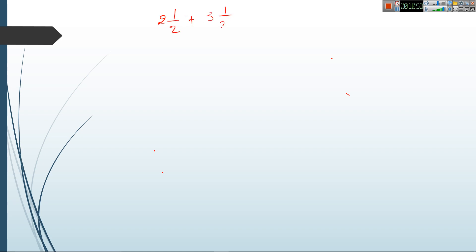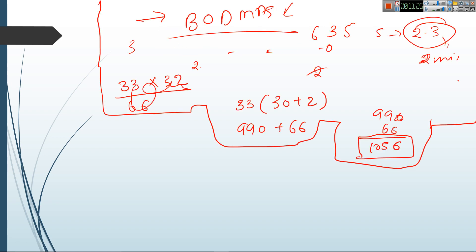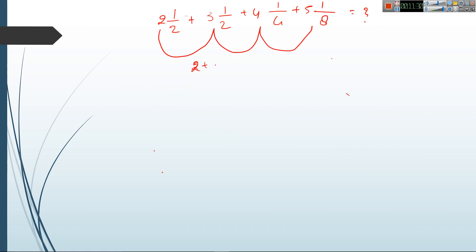One more type of question you will see in your exam: something like 2 and 1/2 plus 3 and 1/2 plus 4 and 1/4 plus 5 and 1/8, equal to what? For these questions, don't convert everything to improper fractions like 5/2 plus 7/2 — it will take more time. Instead, first add all the whole parts: 2 plus 3 plus 4 plus 5 equals 14.